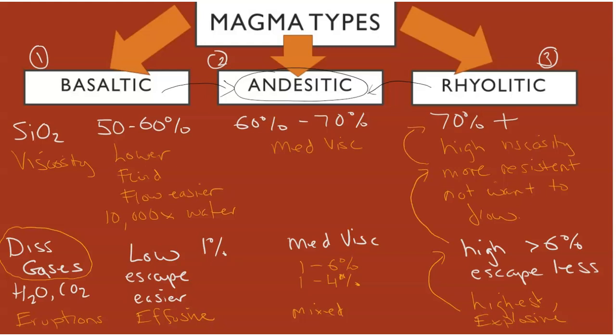This explosive, high-energy eruption will come from rhyolitic and also possibly from andesitic. And don't forget the dacite magma, which falls in between in silica percentage by weight — some of the explosive volcanoes also erupt through dacite magma.